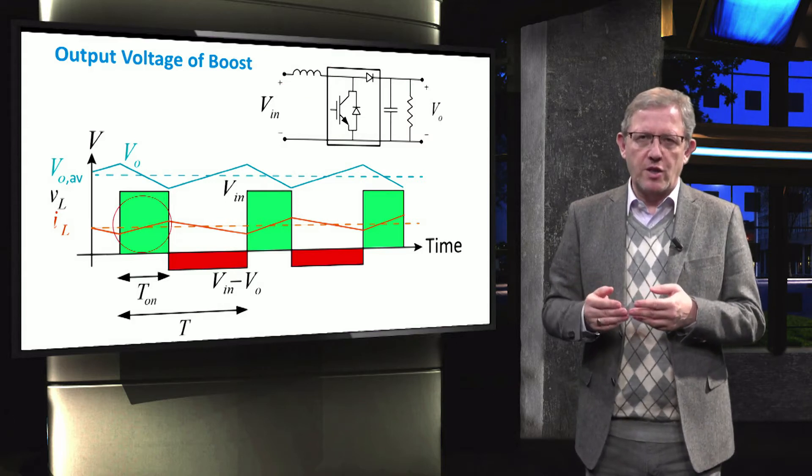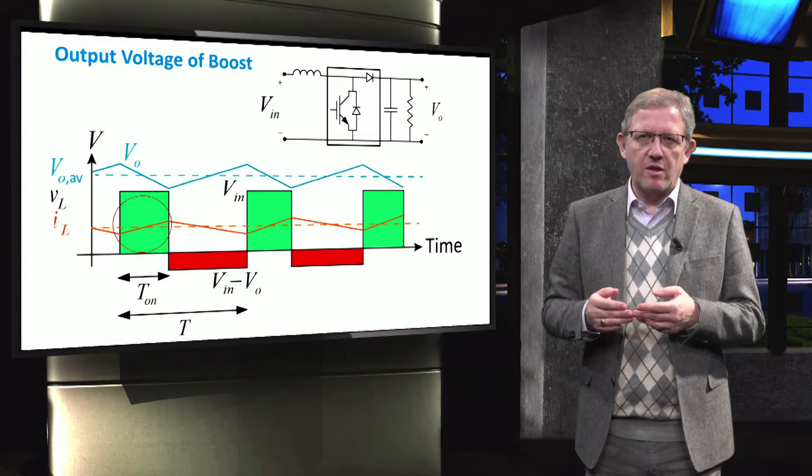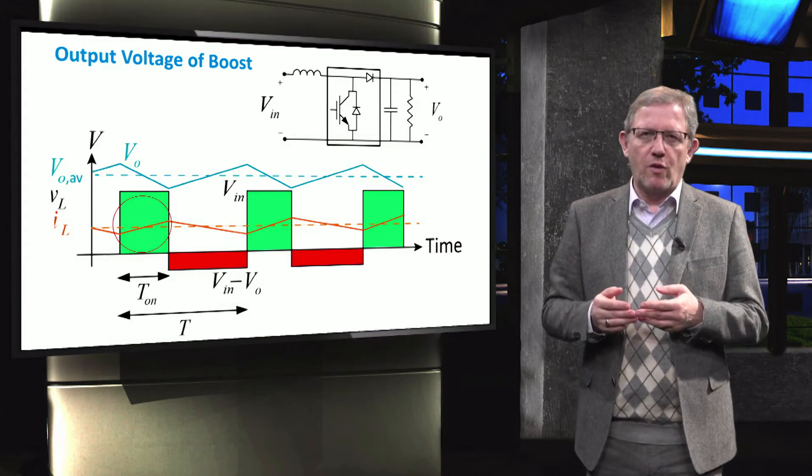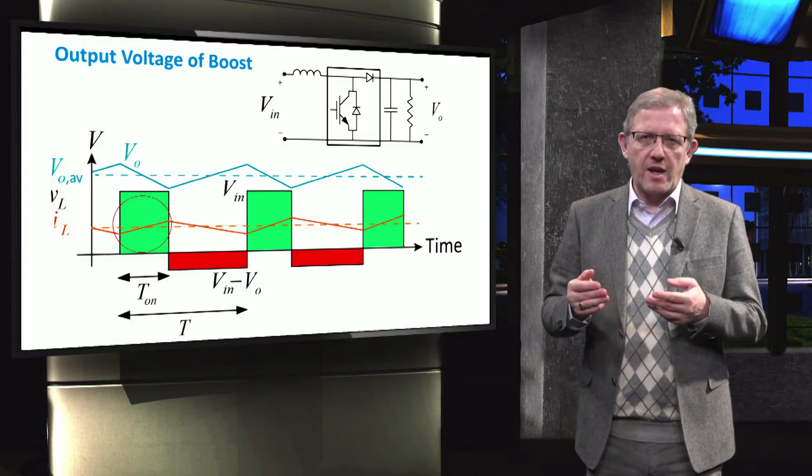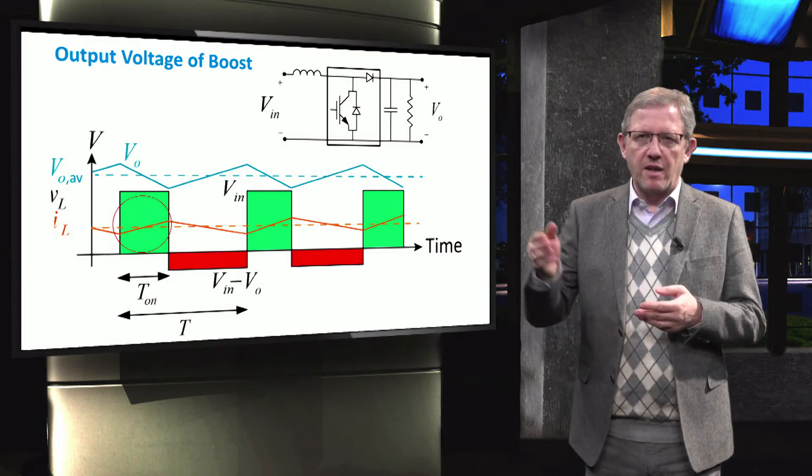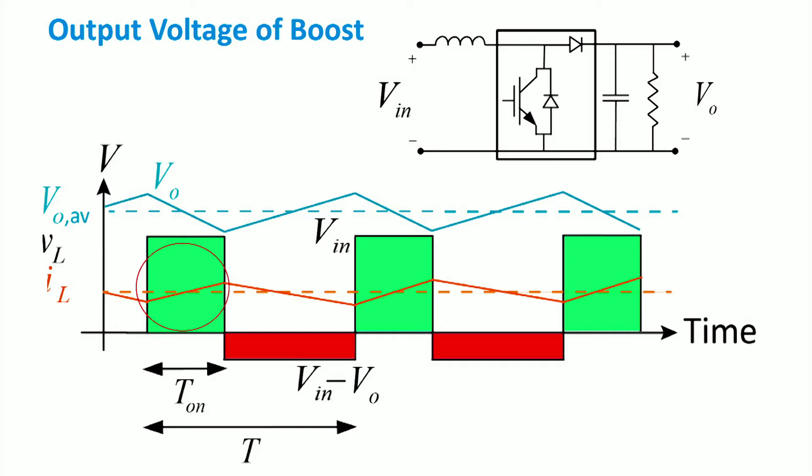During the on state of the switch, the voltage across the inductor is equal to the input voltage that is shown by the green area and the inductor current linearly increases. The capacitor supplies the load and therefore the output voltage starts to decrease.